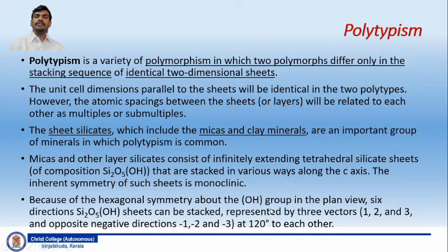The unit cell dimensions parallel to the sheets will be identical in two polytypes. However, the atomic spacing between the sheets, that is the third dimension c-axis, will be related to each other as multiples or submultiples. You can have either two sheets or multiple sheets. Accordingly, the length of the unit cell dimension along the c-axis may vary.